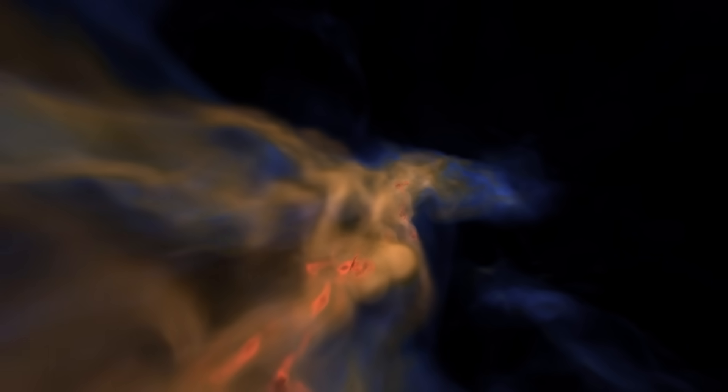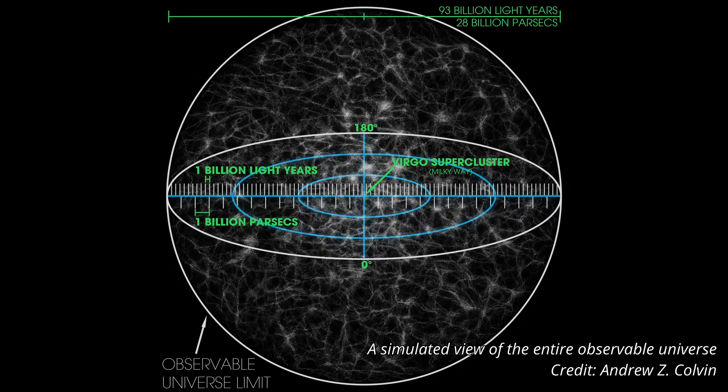The standard model struggles to explain these properties, particularly their persistence, uniformity and coherence across scales. It dismisses the weak ionization present in these clouds as irrelevant, treating the plasma as passive. Yet, what we observe suggests something far more dynamic and resilient is shaping the structure. And the inconsistencies grow when we zoom out.